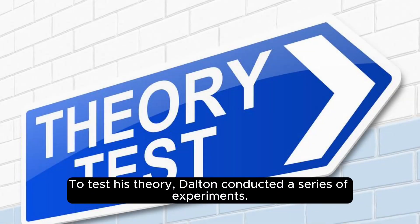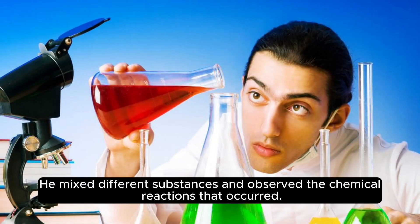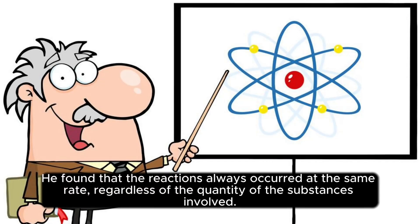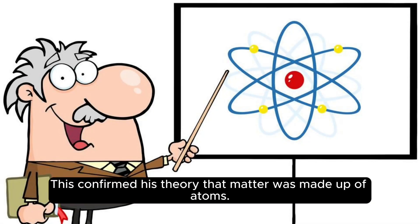To test his theory, Dalton conducted a series of experiments. He mixed different substances and observed the chemical reactions that occurred. He found that the reactions always occurred at the same rate, regardless of the quantity of the substances involved. This confirmed his theory that matter was made up of atoms.